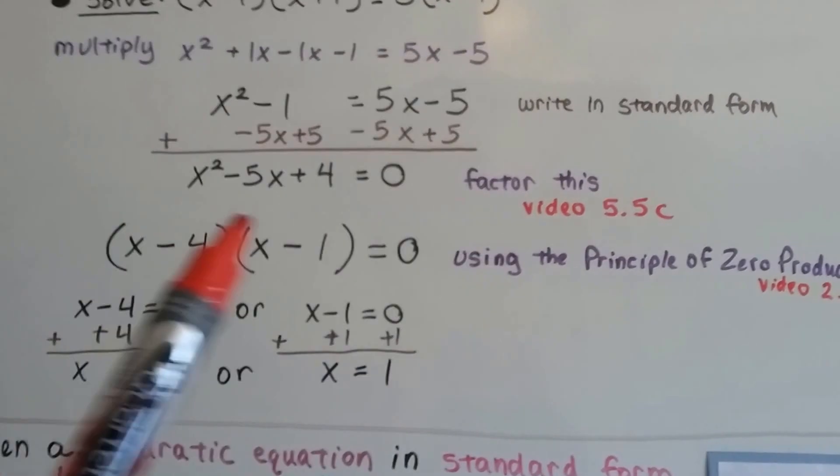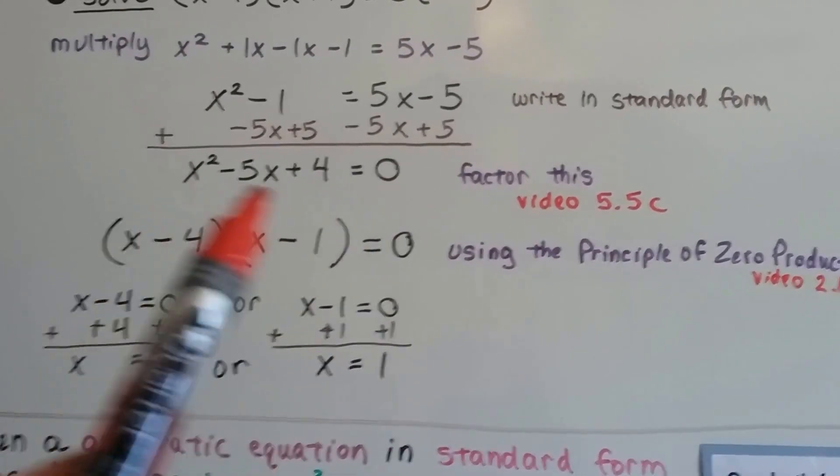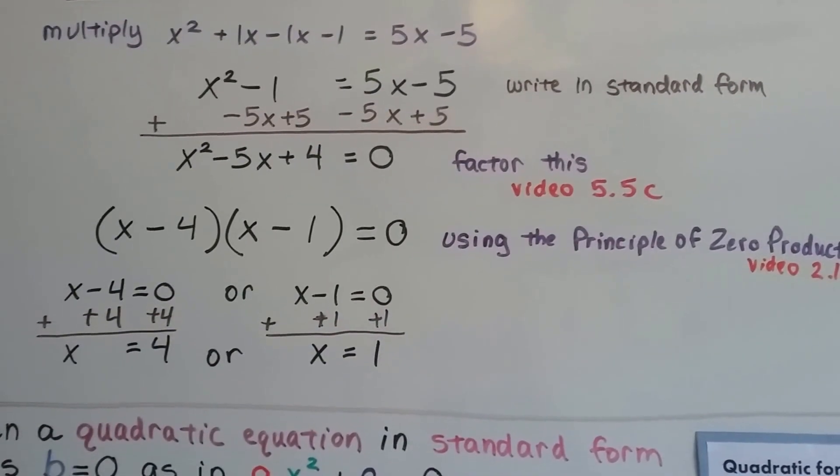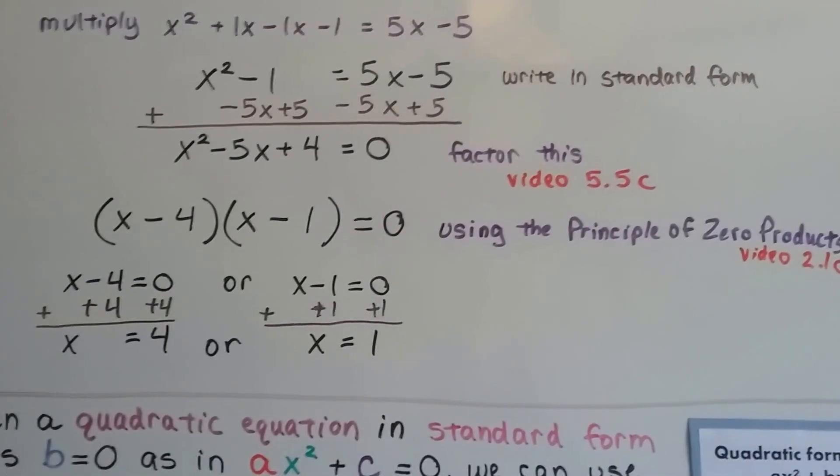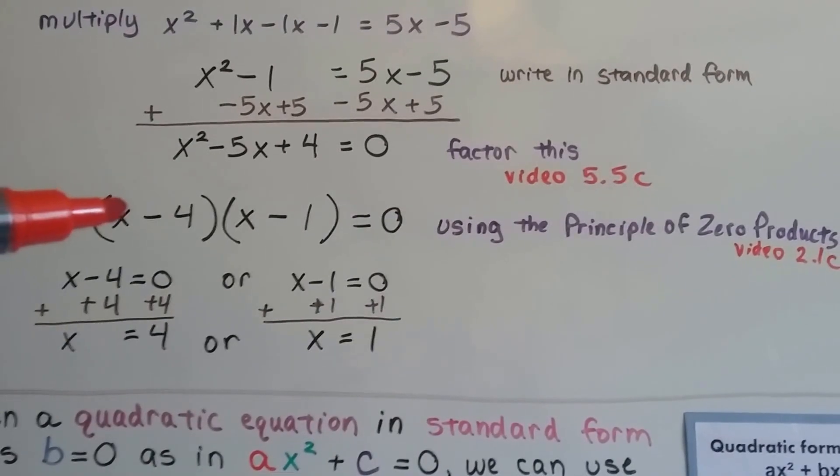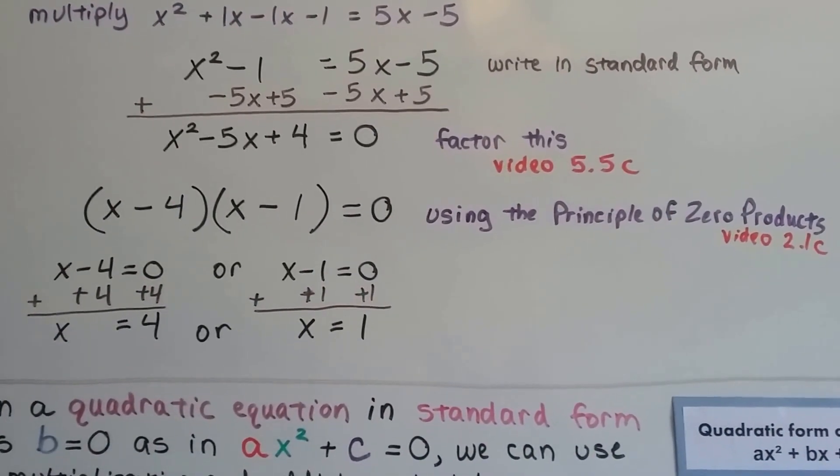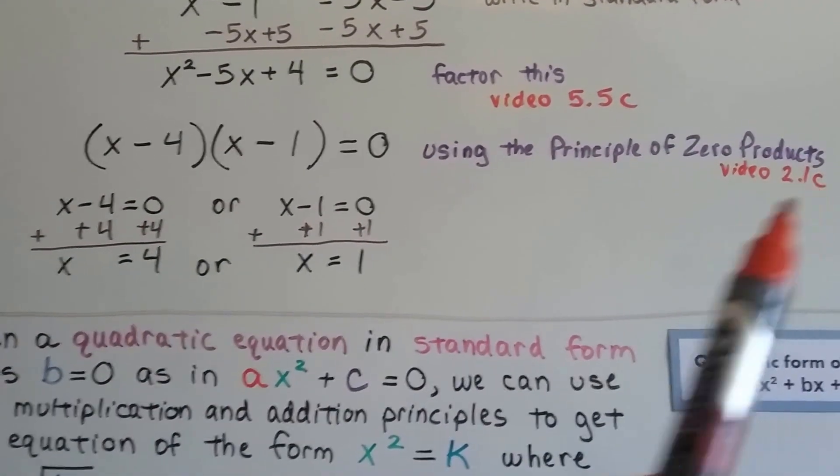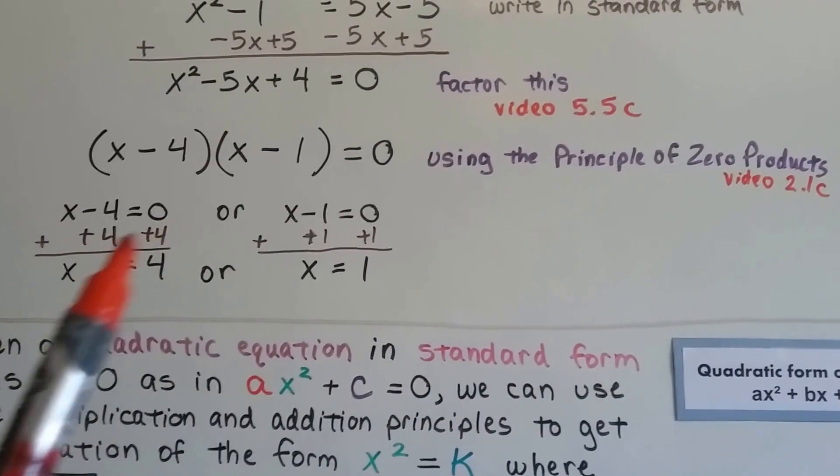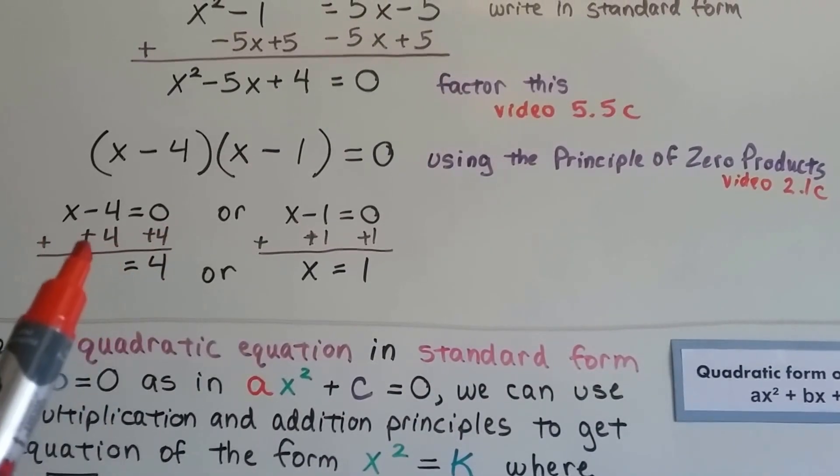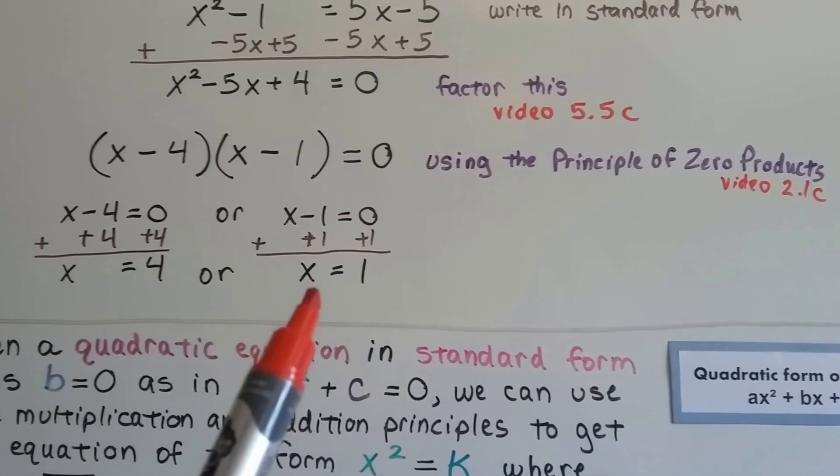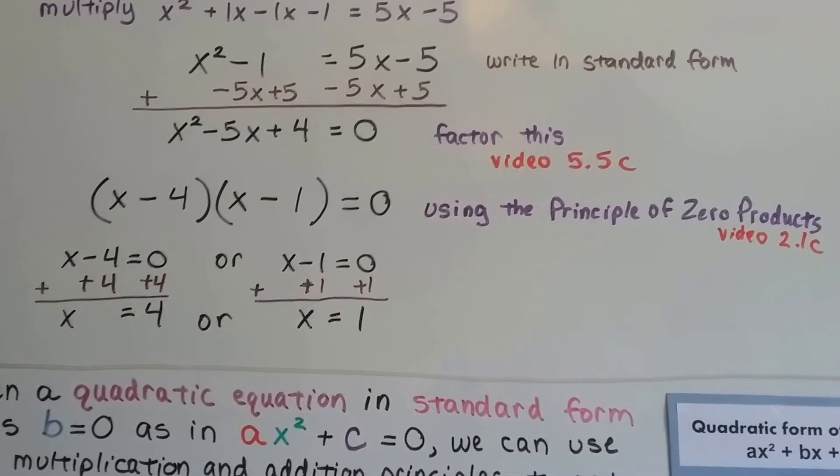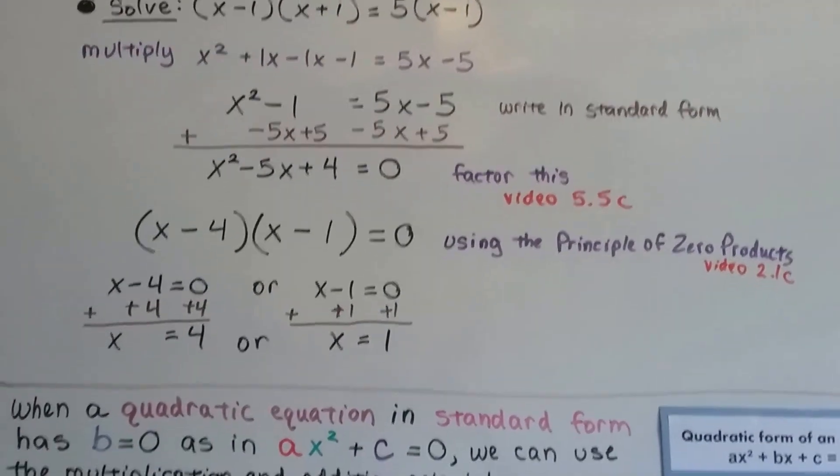And we factor this. And if you don't remember how to factor trinomials, it's in video 5.5c, and there's a link in this description also. So now, we factor it as x minus 4 times x minus 1 equals 0. And using the principle of 0 products, that's video 2.1c again, we isolate the x, and we get x is equal to 4 or x is equal to 1. See how I did that?